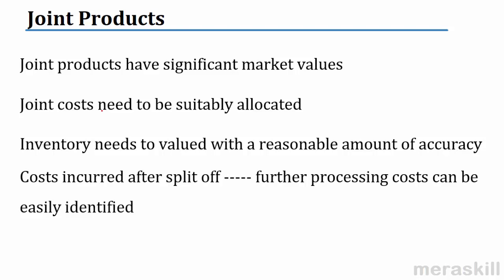Costs incurred after split-off, further processing costs, of course can be easily identified. An example of a joint product is when you process milk, you may get butter, cheese, and cream. We get three products. Possible? So these are joint products.